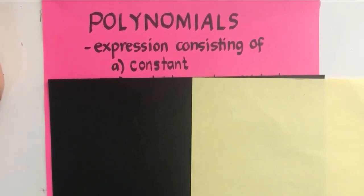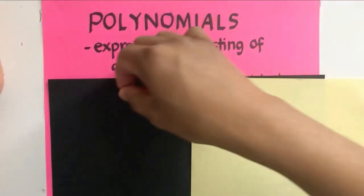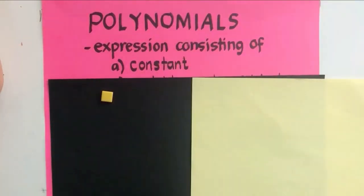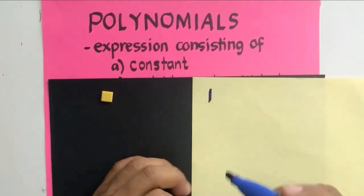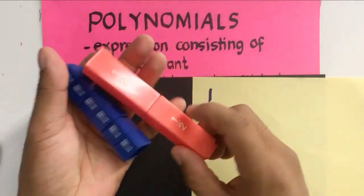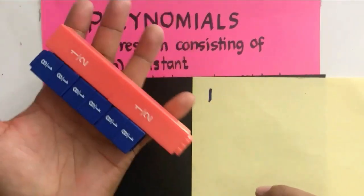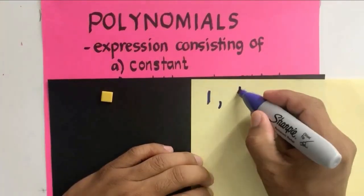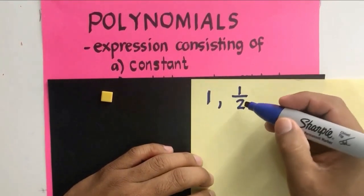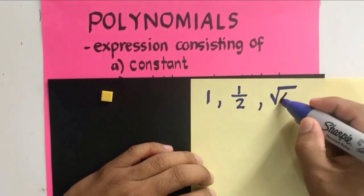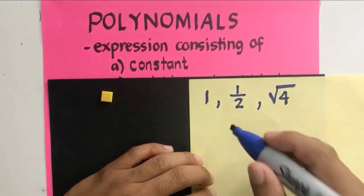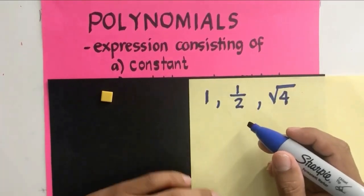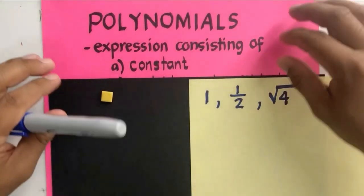Polynomials are expressions consisting of a constant. The number 1 is a polynomial because it's a constant. Fractions are also considered as polynomials because their values are constant, so 1/2 is an example. You can also have the square root of 4 because the value of square root of 4 is a constant. Any number is a polynomial because its value is constant.